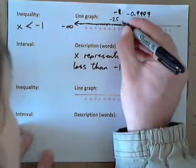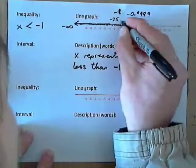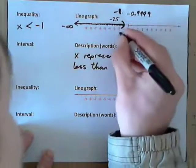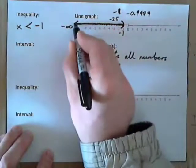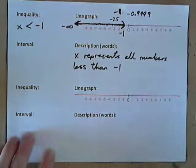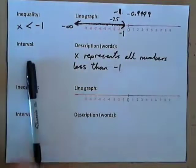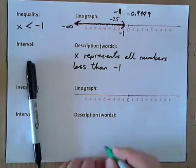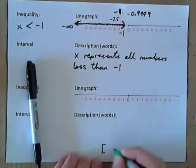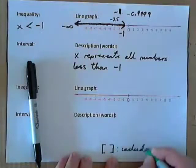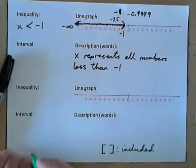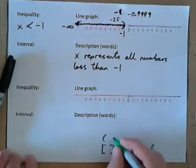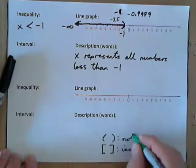And when it's not including, we put a parenthesis — like that — to show that it's as far as negative 1 but not including negative 1. So, these square brackets mean included, whereas the parenthesis means not included.